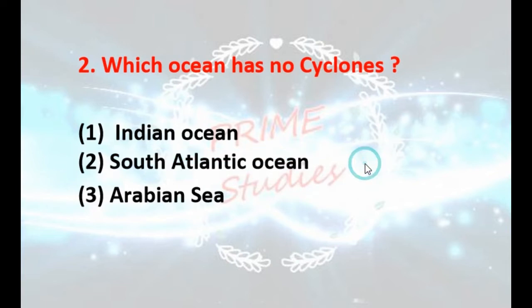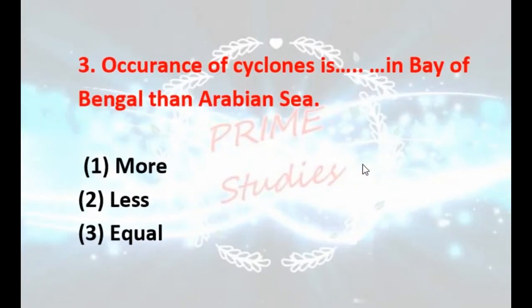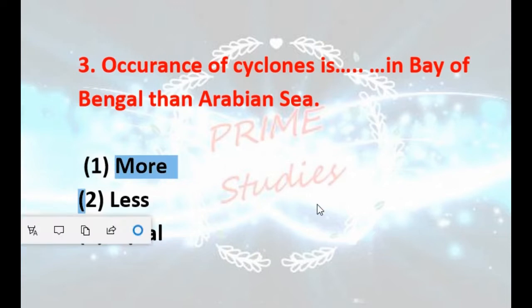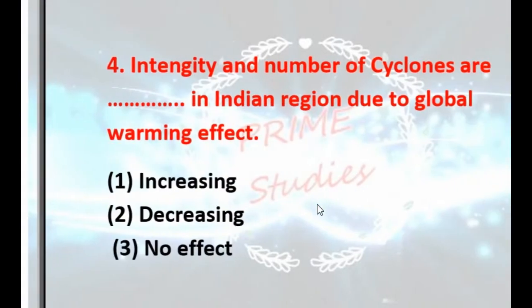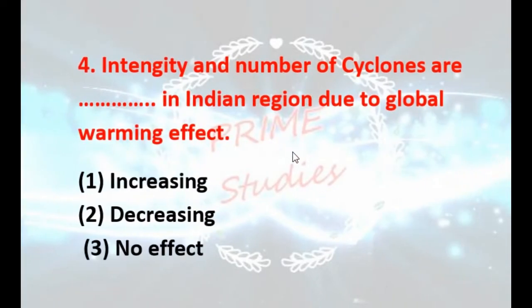Occurrence of cyclones: is it more in the Bay of Bengal or the Arabian Sea, or are they more or less equal? It is more in the Bay of Bengal. Are the intensity and number of cyclones in the Indian region increasing, decreasing, or showing no effect due to global warming? These are decreasing.